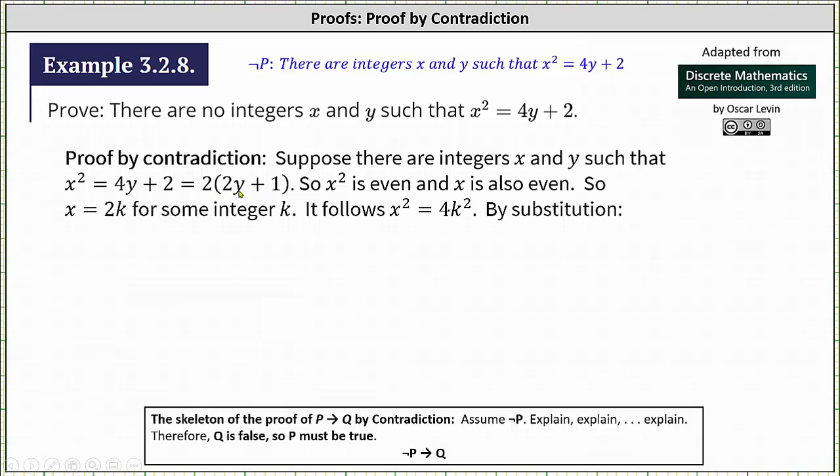Notice x squared is a multiple of 2, so x squared is even and x is also even. So x equals 2k for some integer k.